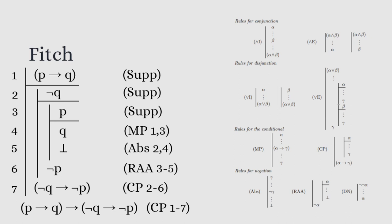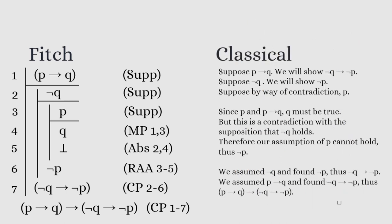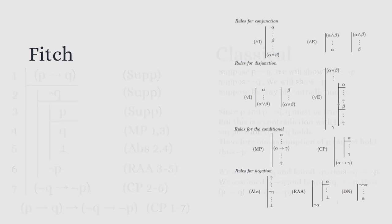And from here, we can just do a one-to-one translation of a Fitch-style proof into a classical written proof. By the way, this visualization of the rules is taken from Peter Smith of logicmatters.net, who has some useful resources on his website.